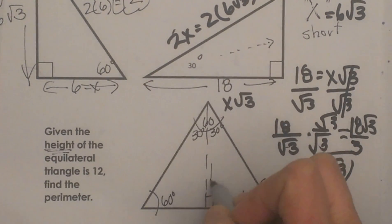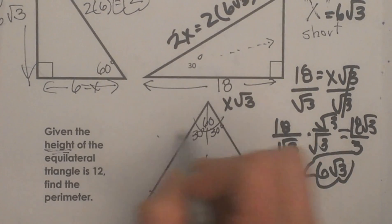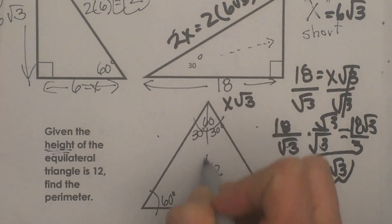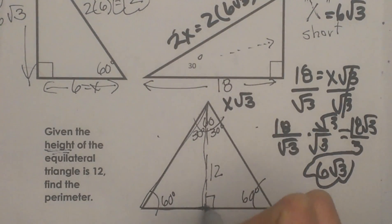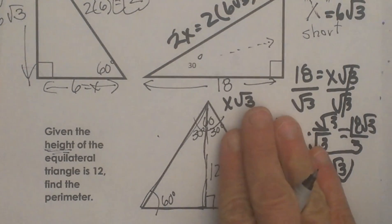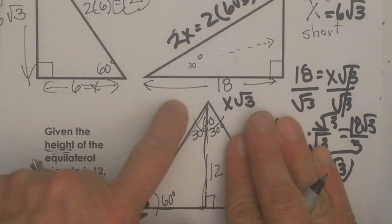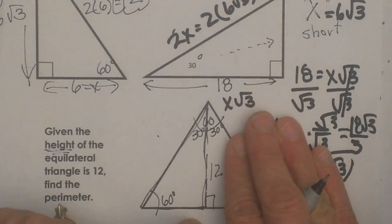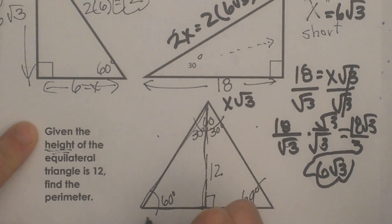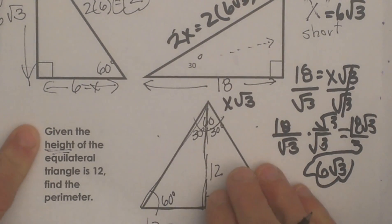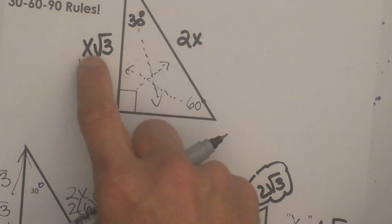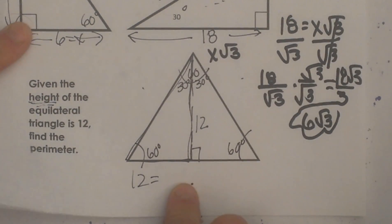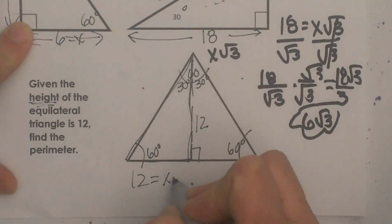We are given this height of 12 and need to find the perimeter. I will isolate the left side and focus on it. The altitude is my long leg, so I have to solve it like the second problem. I set 12 equal to the formula for the long leg, which is x times the square root of 3.